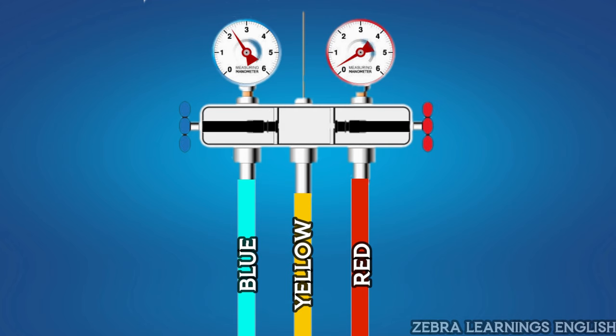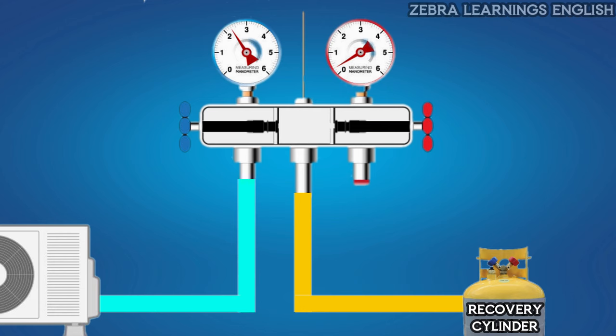By controlling the on-off valve, the yellow hose can be used for low pressure or high pressure gauge. For example, after connecting the blue or red hose to the unit, the refrigerant will travel through the hose to the gauge. Through this, you can know the pressure of refrigerant.